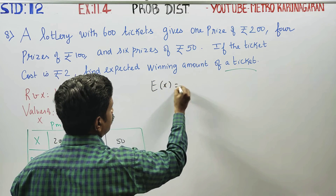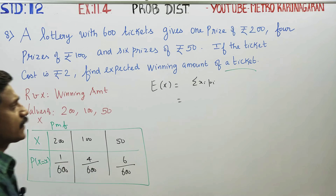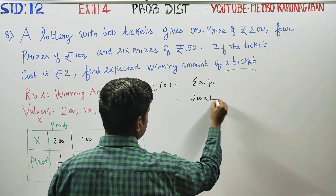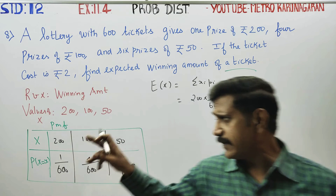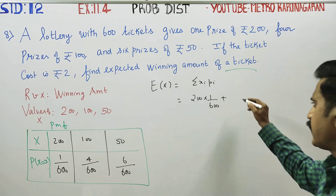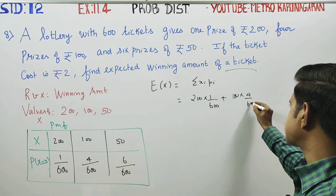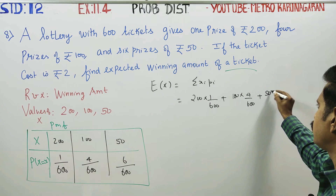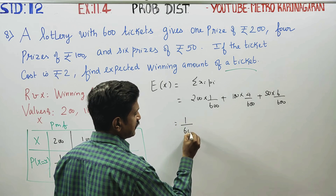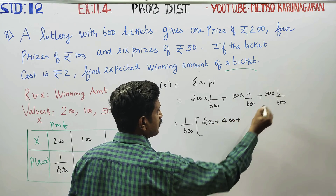The expectation formula is E(X) = Σxᵢpᵢ. Setting up the table: 200 × (1/600) plus 100 × (4/600) plus 50 × (6/600).